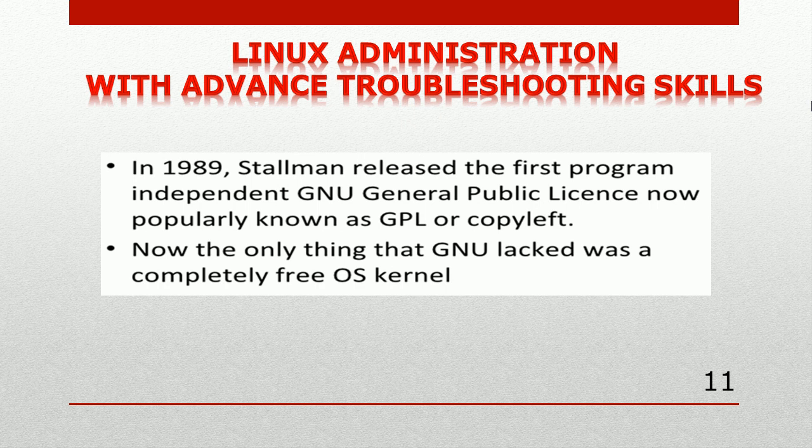In 1989, Stallman released the first program under the GNU General Public License, now properly known as GPL or copyleft. GPL — General Public License — is a free software license widely used across the world. It allows users to study, run, share, and modify the software. This license was originally written by Richard Stallman of the Free Software Foundation for the GNU project, and first came into picture in September 1983.